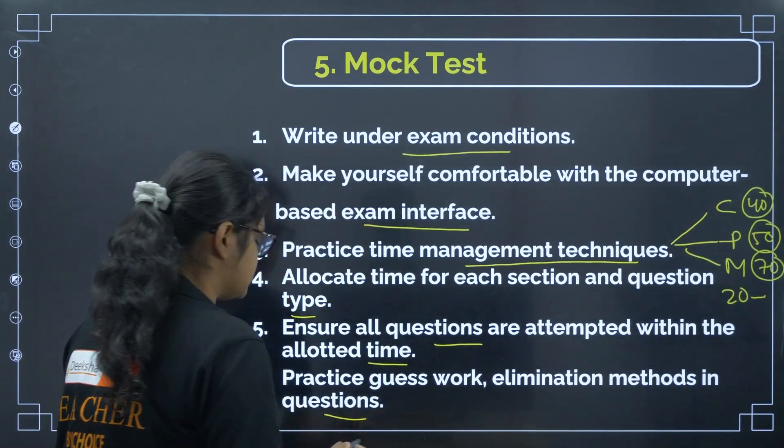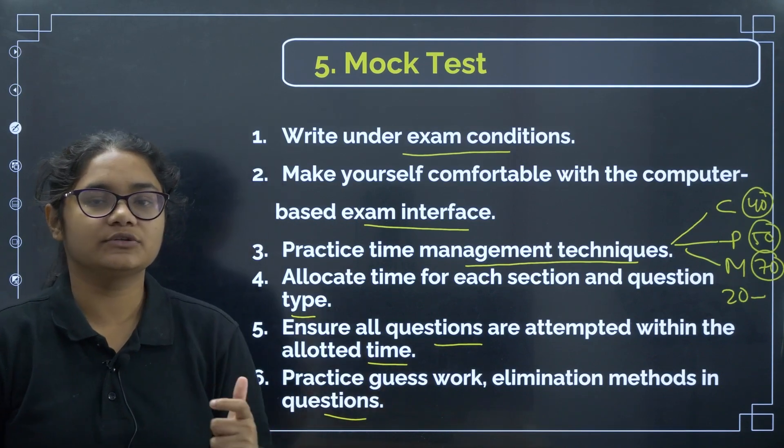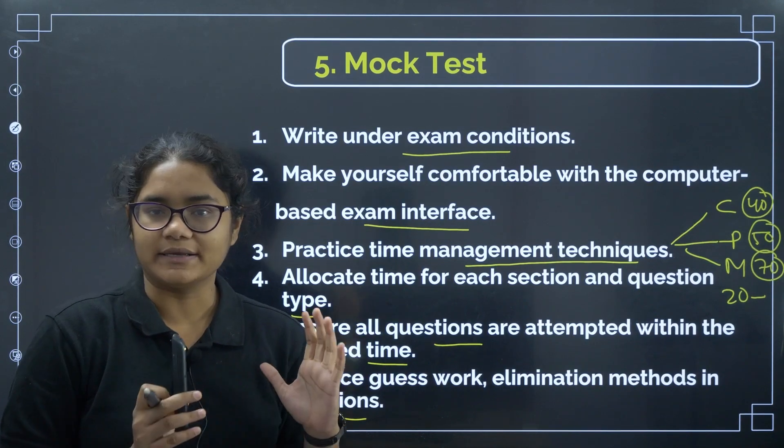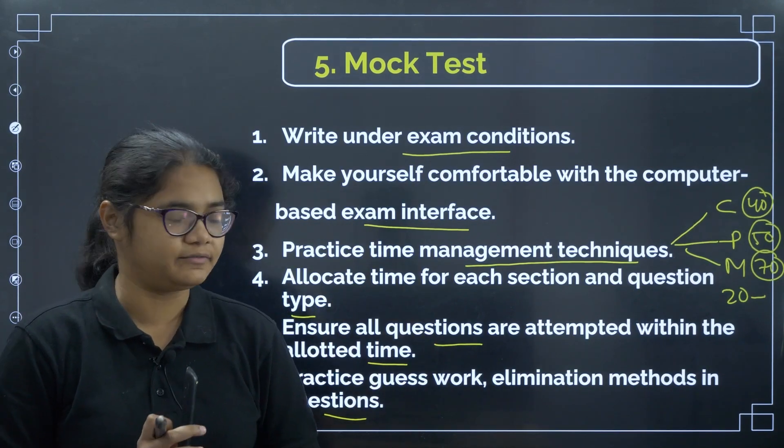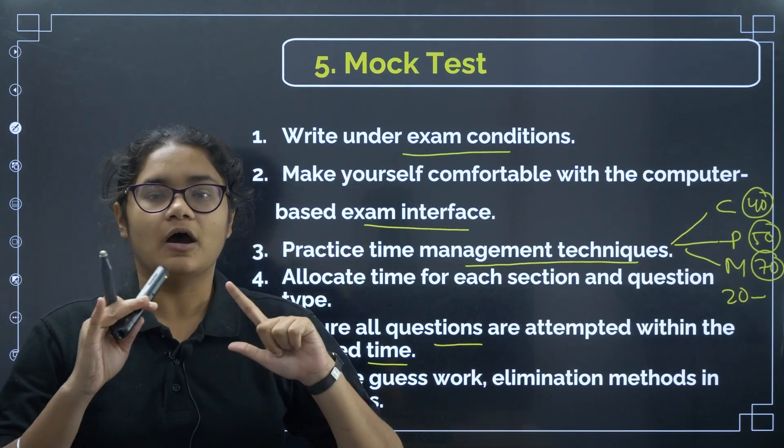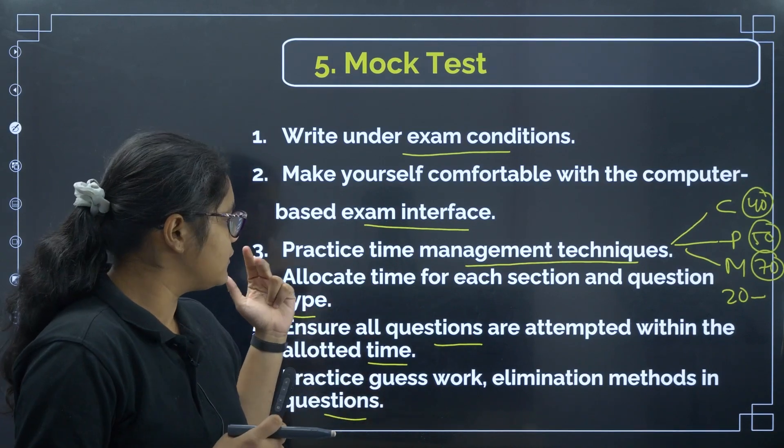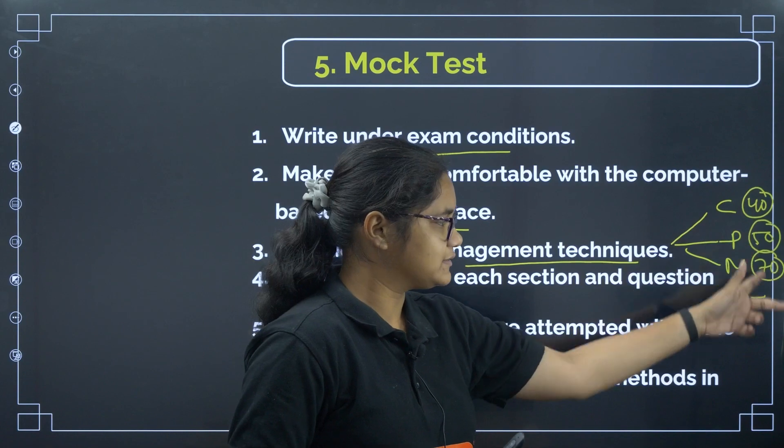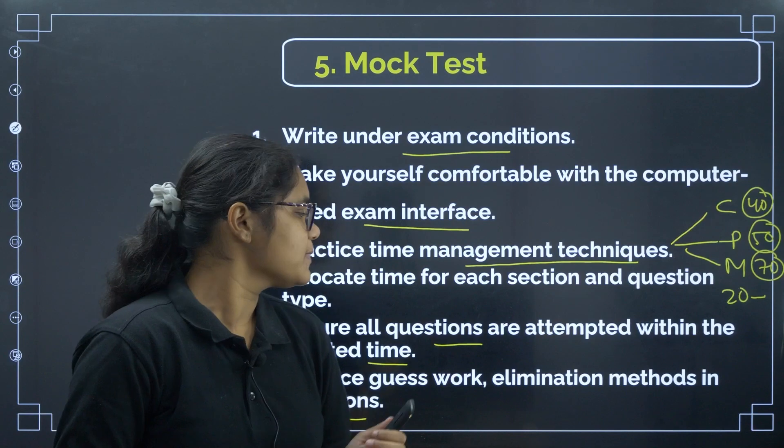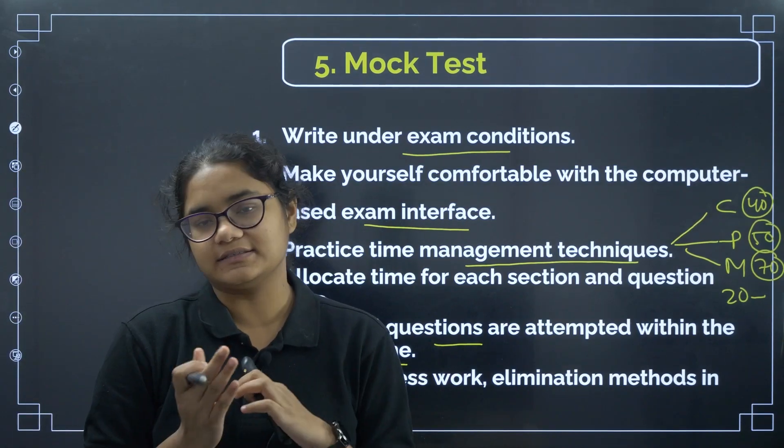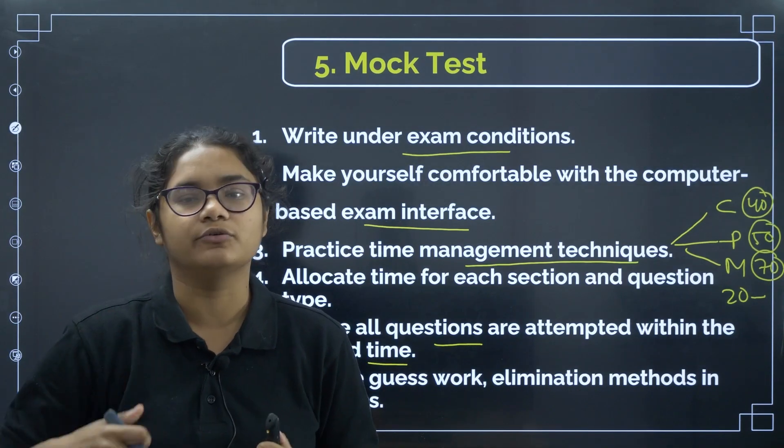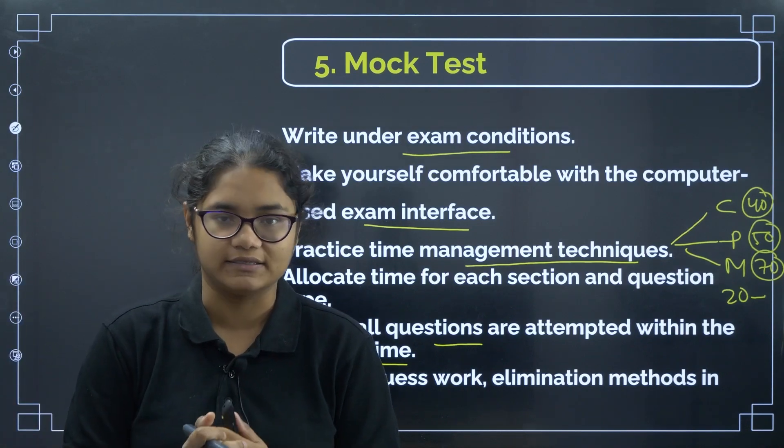Next is practice guesswork elimination methods in the questions. So when you are trying to solve these questions, just try to eliminate and try to use some logic, guess how you can guess the question. That also will be discussed in our paper attempting strategy video. So this is what you have to do in the mock test. First is you have to write in the exam conditions, you have to be very thorough, very familiar with the CBT mode. Then you can practice your time management techniques. This is a suggestion based on because chemistry papers comes easy and it does not have much calculation. So that can be solved easily and once you are very confident as your start is very positive you will be boosted up throughout the exam.